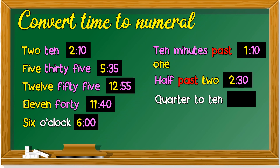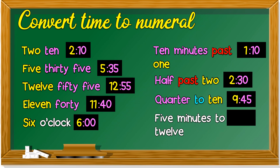'Quarter to 10' — almost 10 o'clock. For quarter to, you get 60 minus 15, which is 45. It's 'to 10,' meaning not yet 10, so you take 10 minus 1, which gives 9. So it's 9:45. 'Five minutes to 12' — a complete circle is 60 minutes, minus 5 gives 55. It's 'to 12,' meaning not yet 12.